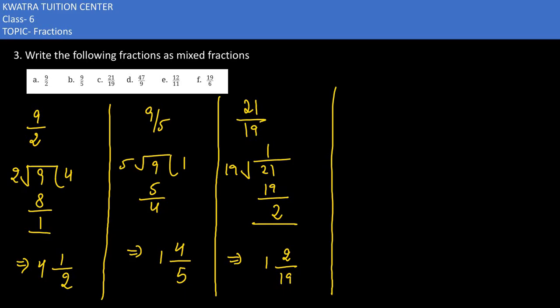Let's do the D part: 47 by 9. I need to take 9 into 5, which is 45, so 2 is the remainder. Now we will write this: 9 remains the denominator, and the numerator of the fractional part would be the remainder, which is 2. What is our whole number?